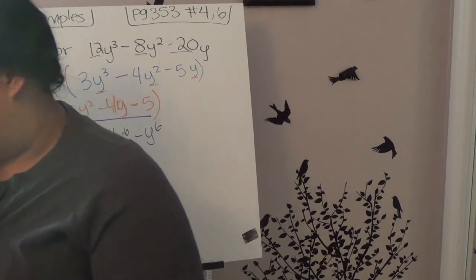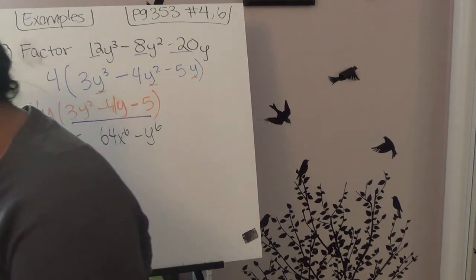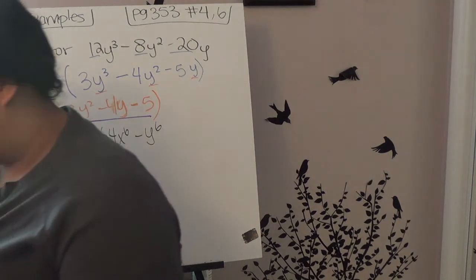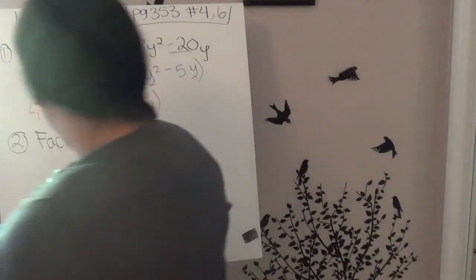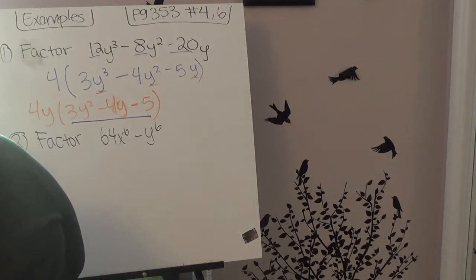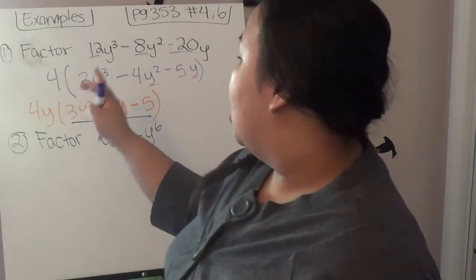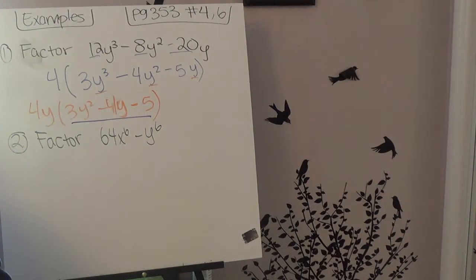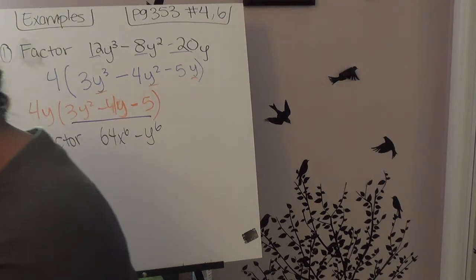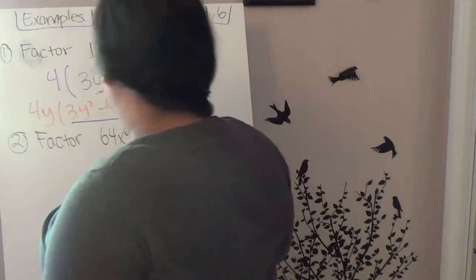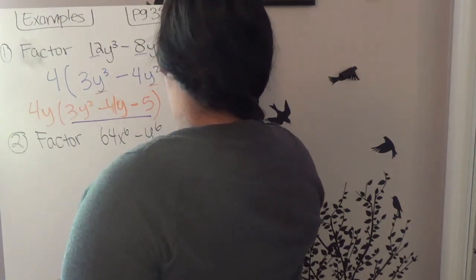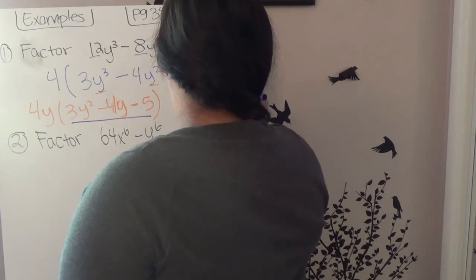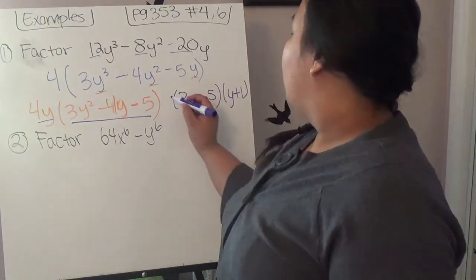From 3y squared − 4y − 5, we have 3 terms, so on page 349 we look at perfect square trinomials or general trinomials. Using the general trinomial method, this factors to (3y − 5)(y + 1). Don't forget to bring along the 4y we took out earlier, so the complete final answer is 4y(3y − 5)(y + 1).